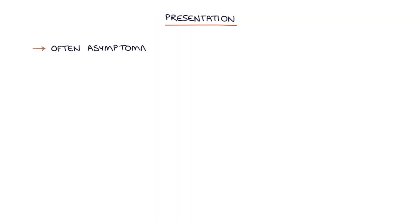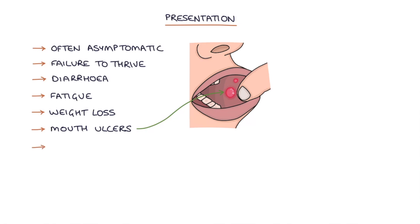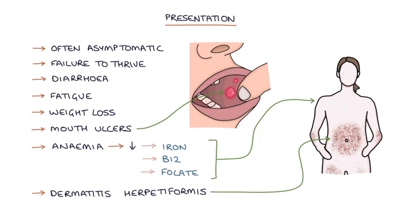Patients with celiac disease often are asymptomatic, so you need to have a low threshold for testing where it may be suspected. Some common presenting features are failure to thrive in young children, diarrhea, tiredness or fatigue, weight loss, mouth ulcers, and anemia secondary to deficiency of iron, B12, and folate because they're not absorbing those nutrients. There's also a typical rash called dermatitis herpetiformis, which is an itchy blistering rash that typically occurs on the abdomen — this is quite a common exam question.